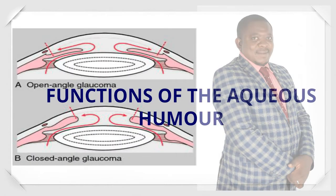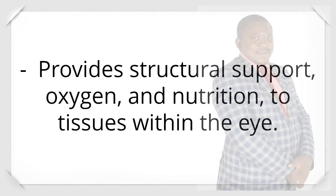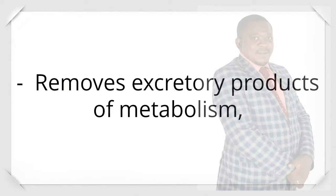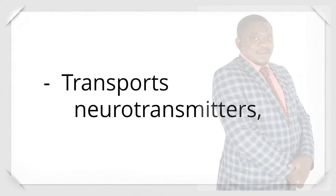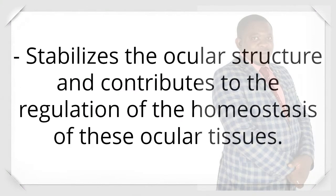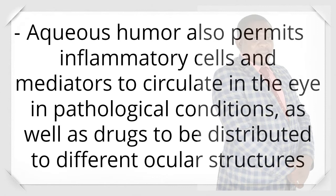Functions of the aqueous humor: it provides structural support, oxygen, and nutrition to tissues within the eye. It removes excretory products of metabolism, transports neurotransmitters, stabilizes the ocular structure, and contributes to the regulation of the homeostasis of these ocular tissues. Aqueous humor also permits inflammatory cells and mediators to circulate in the eye in pathological conditions, as well as drugs to be distributed to different ocular structures.